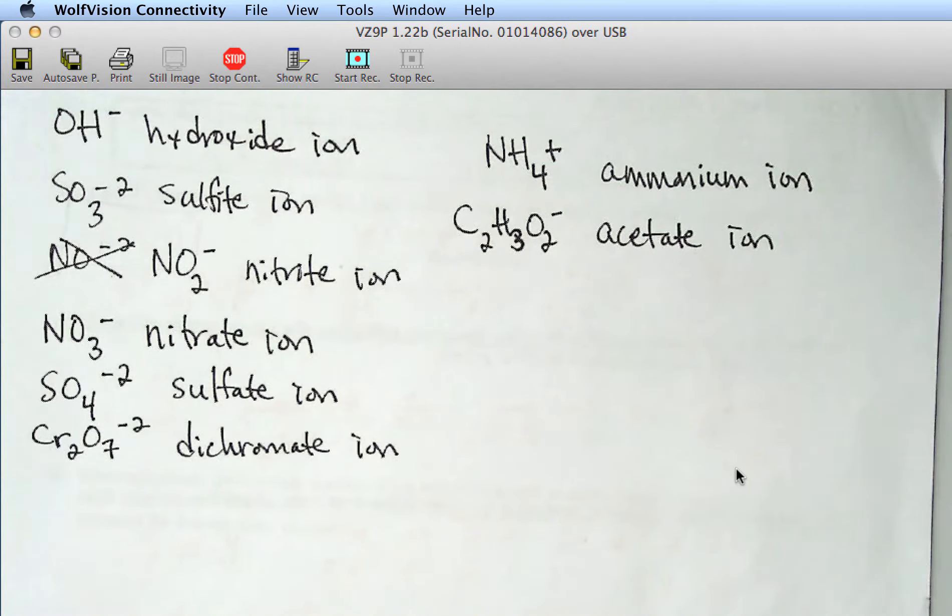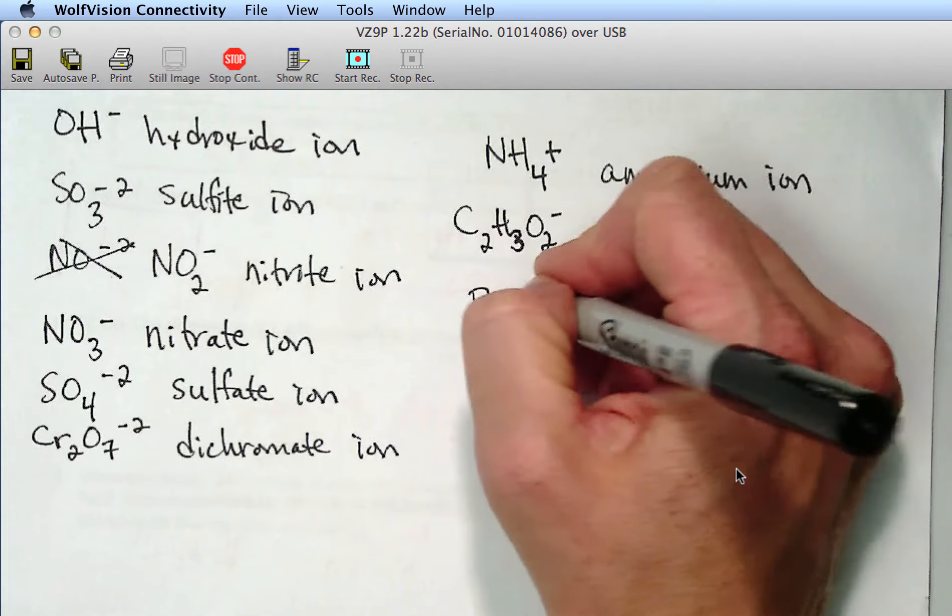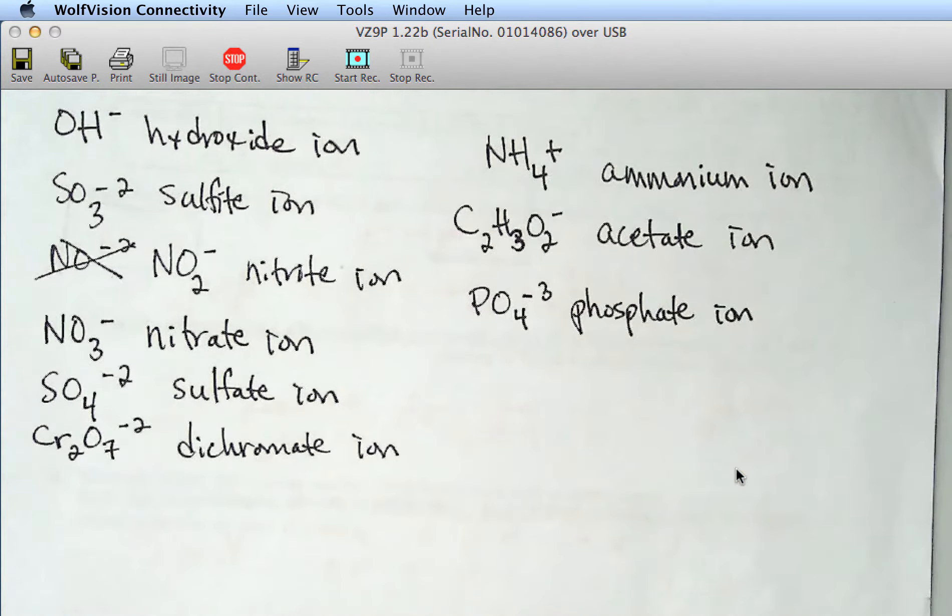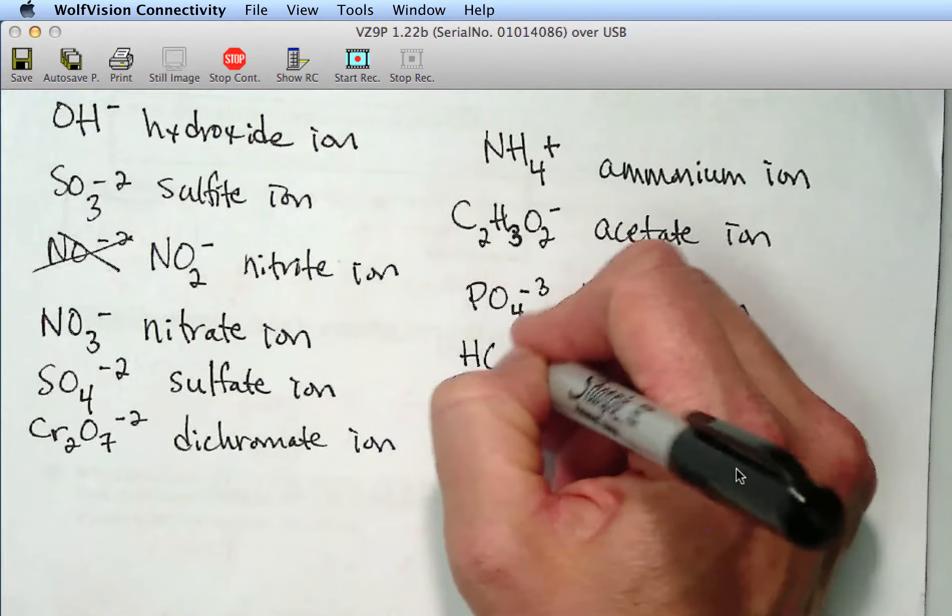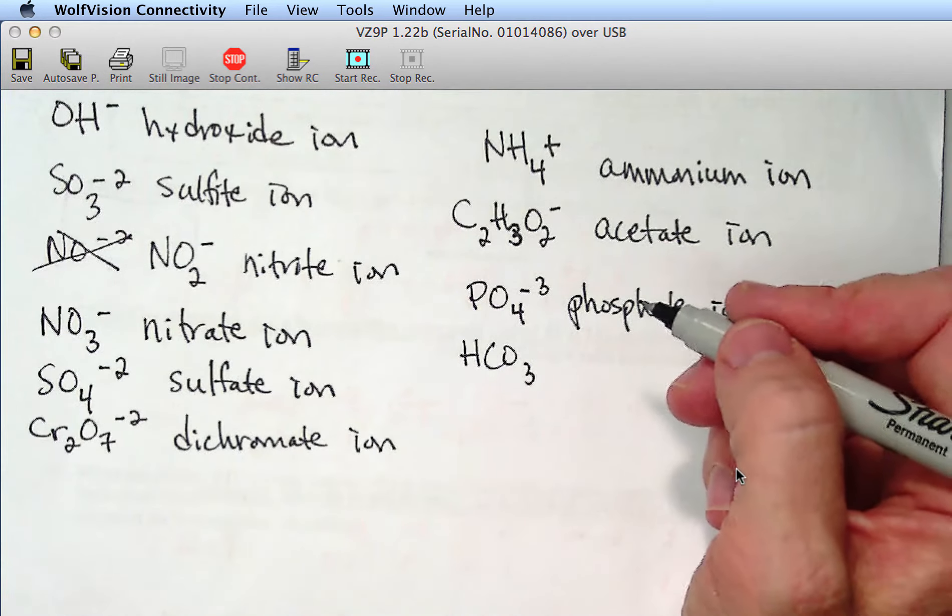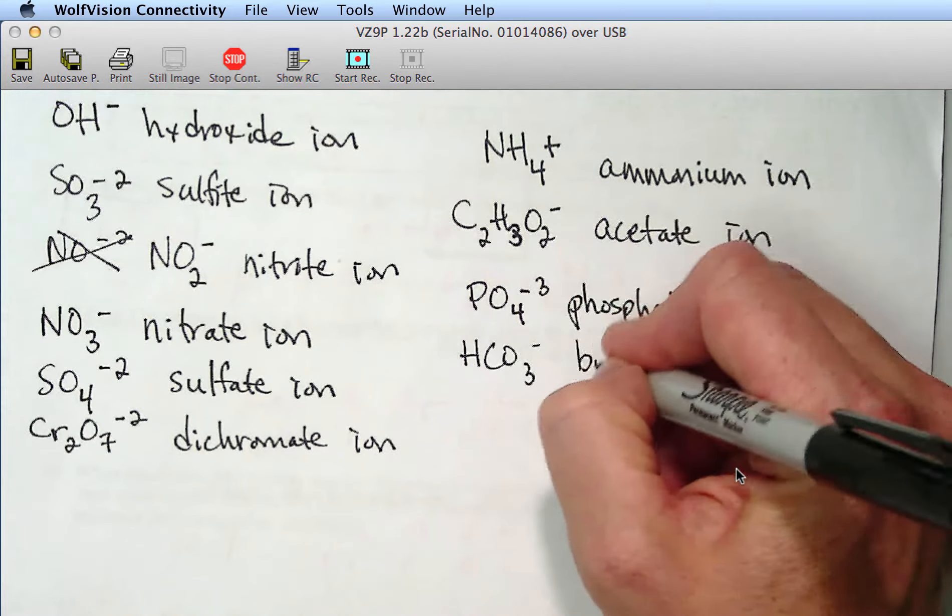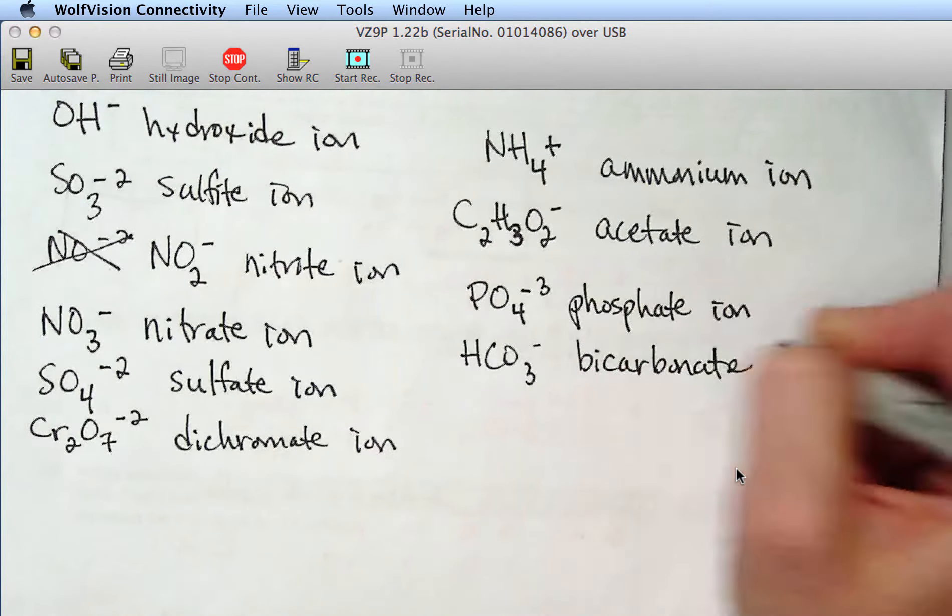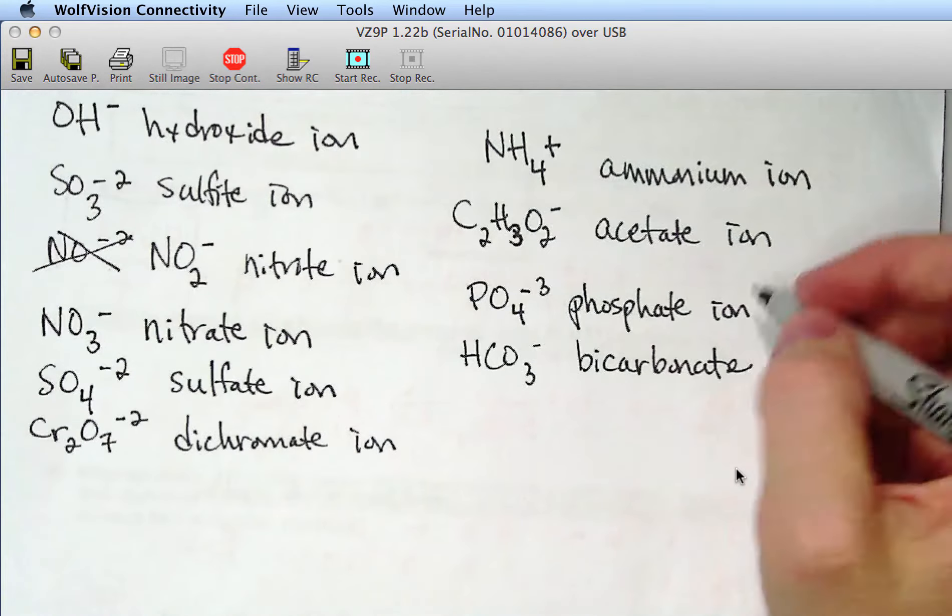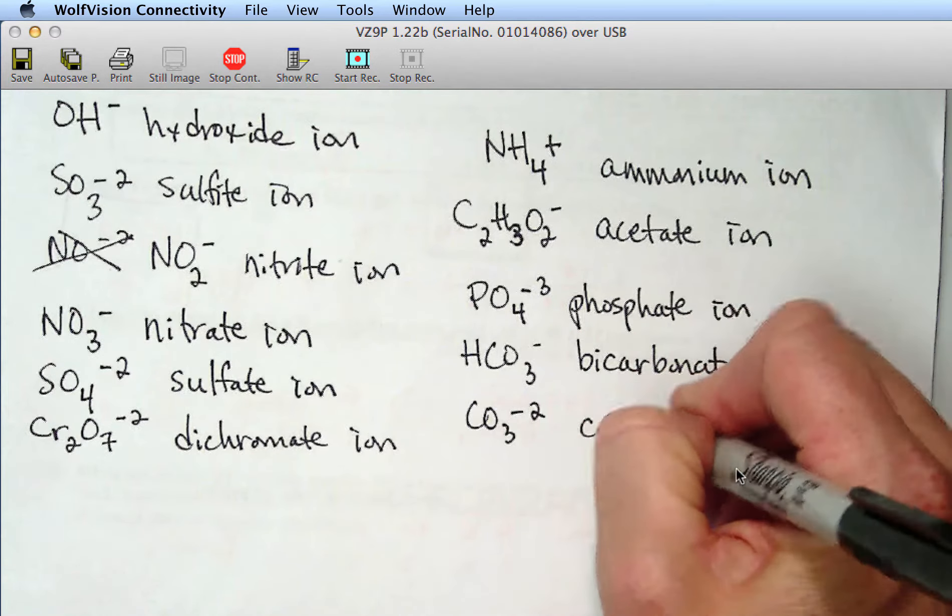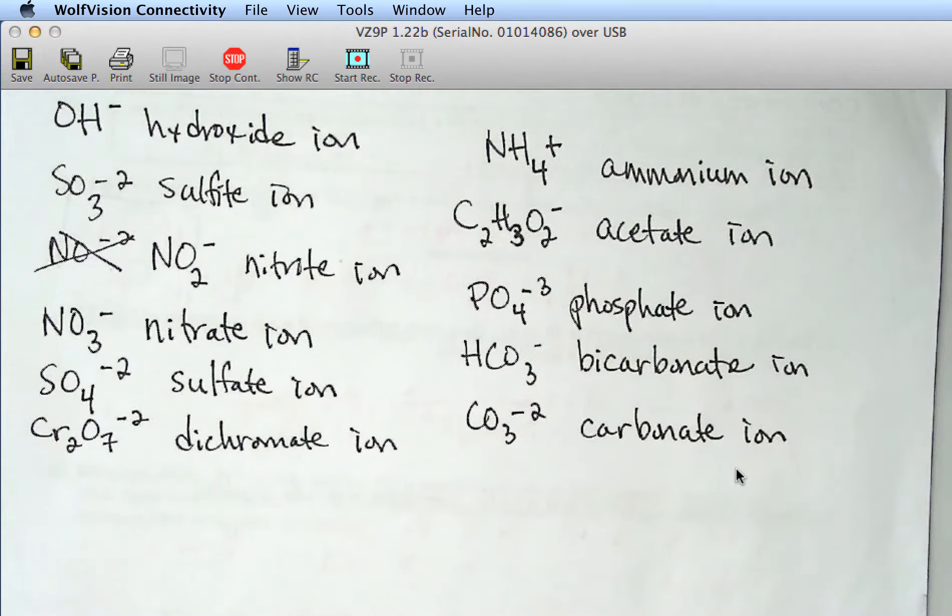Phosphate. Phosphate. PO4 minus 3. Phosphate ion. Anything else? Bicarbonate. Bicarbonate. HCO3. What's the charge on bicarbonate? Minus, minus one.